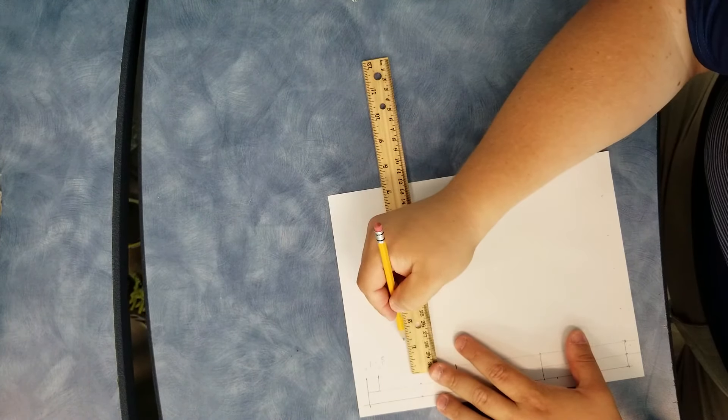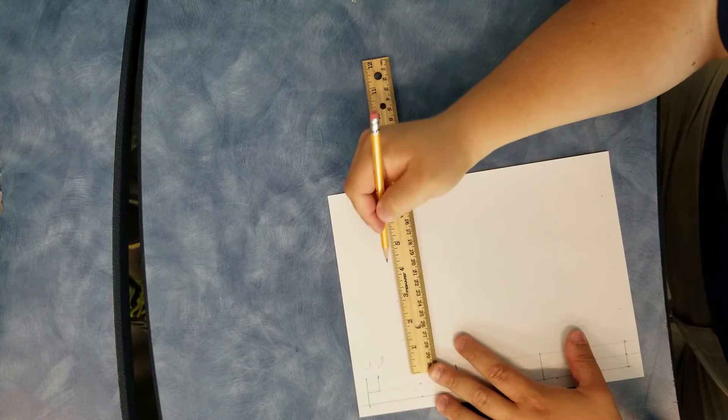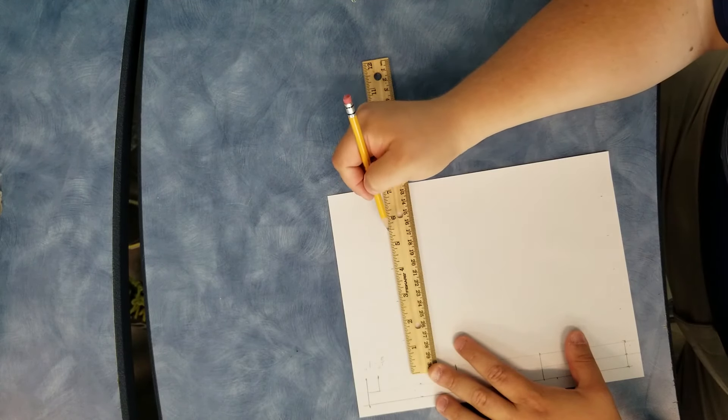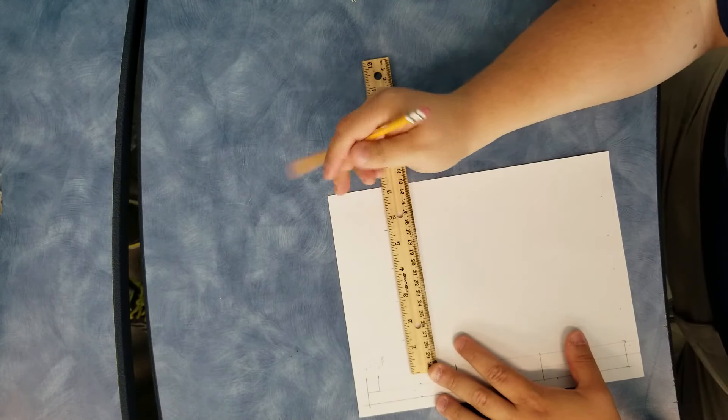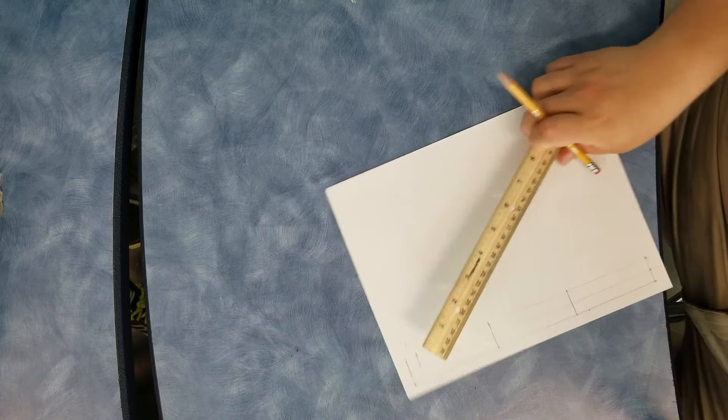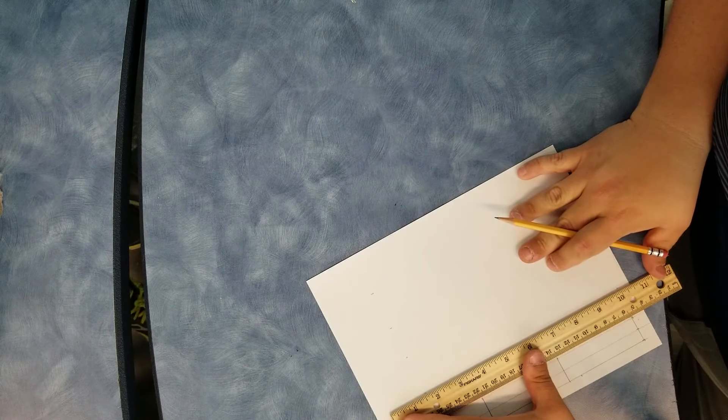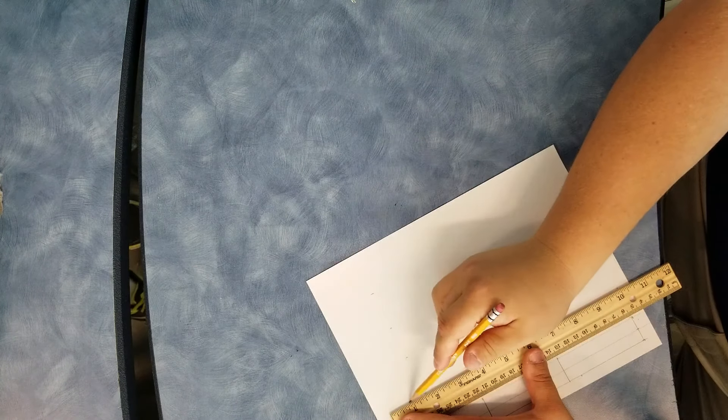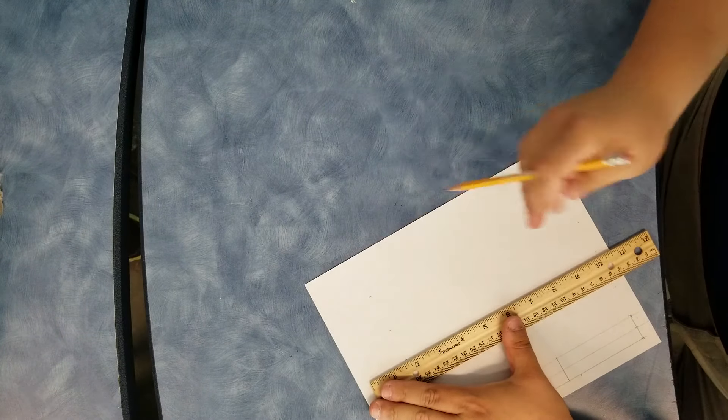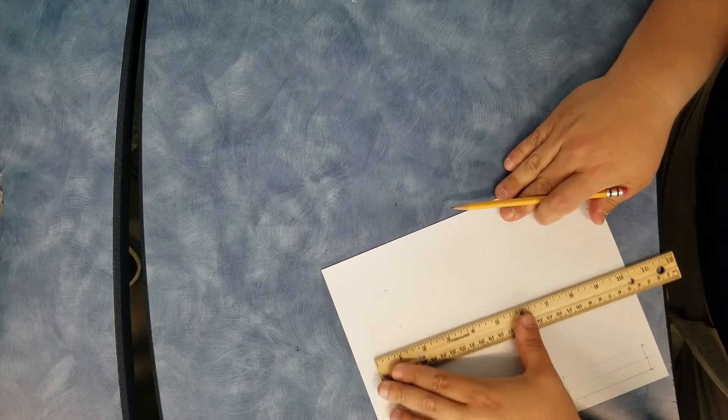So 1¼ plus 1½ is 2¾. Plus 1¼ is 4, plus 1½. This is 5½. Those should be parallel lines. And since these are construction lines, we'll make them nice and light. Really, I don't need to go all the way across the page for these over here, but we can erase it later.